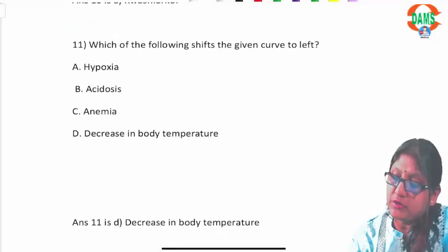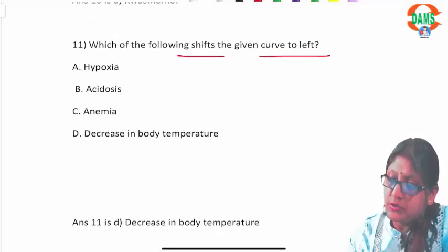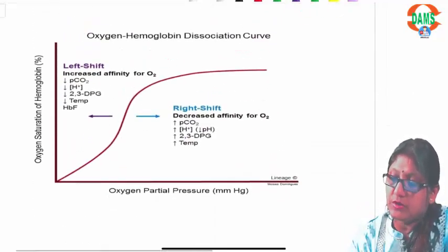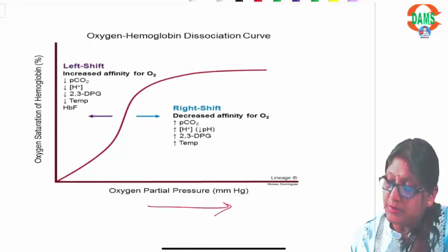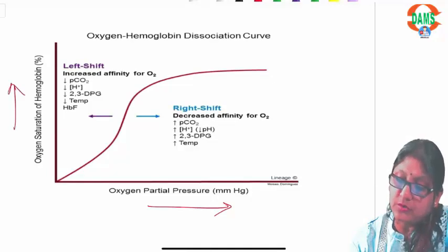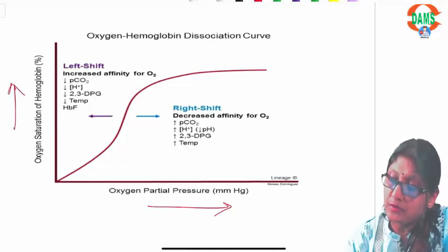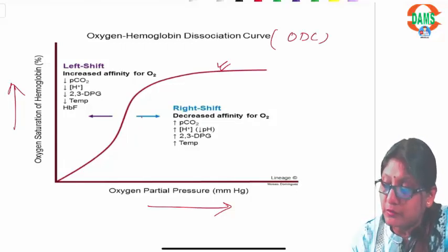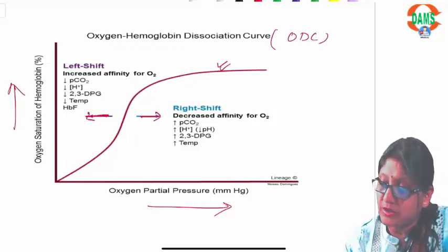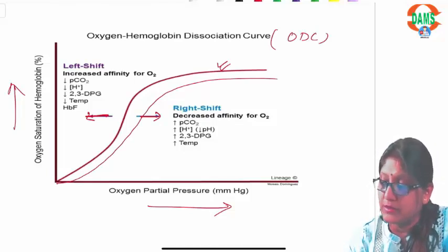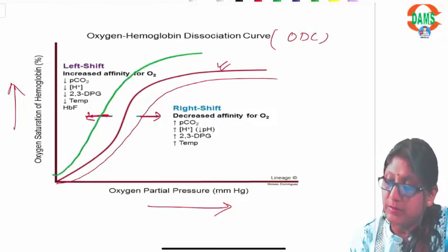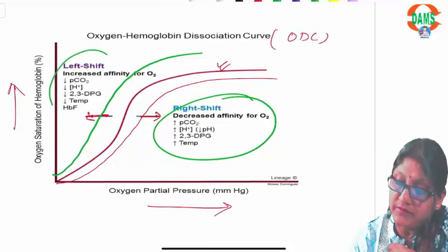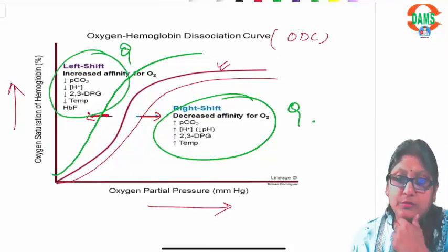Question eleven asks which factor shifts the oxygen dissociation curve to the left. The ODC has partial pressure of oxygen on the x-axis and hemoglobin saturation on the y-axis. Rightward shift means decreased oxygen affinity; leftward shift means increased affinity. These shifts are very important for MCQs.